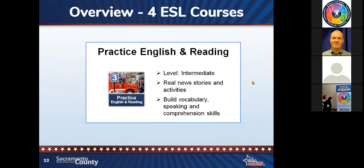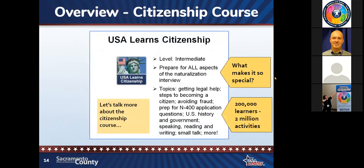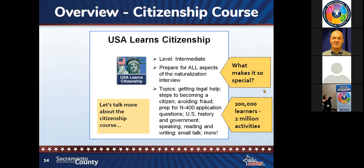The Second English Course is considered intermediate — low intermediate to high intermediate ESL — with 20 video-based units covering job and life skill lessons, 141 lessons, and more than 800 activities. Practice English and Reading is considered intermediate level; it includes real news stories and activities that build vocabulary, speaking, and comprehension skills. We also have our USA Learns Citizenship Course, which is intermediate level and prepares learners for all aspects of the naturalization interview, covering getting legal help, steps to becoming a citizen, avoiding fraud, preparing for the N-400 application, US history and government, and speaking, reading, writing, and small talk.